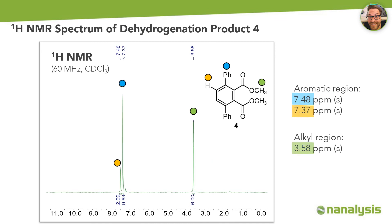After confirming the outcome of every single step of the presented synthesis, the final dehydrogenation product shows a very clean NMR spectrum with two singlets in the aromatic region at 7.48 and 7.37 ppm, and a singlet in the alkyl region at 3.58 ppm, which can again be assigned to the methyl groups in the molecule.